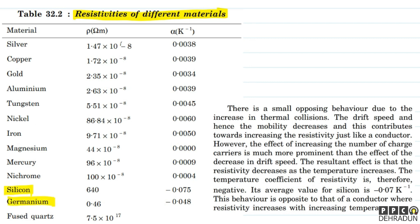But for silicon and germanium, alpha is negative. Alpha is the temperature coefficient of resistivity, and for semiconductors it is negative. So we understand that the behavior of semiconductors is opposite to that of conductors. In conductors, resistivity increases with temperature, but in semiconductors it is the opposite — and so resistance also decreases.